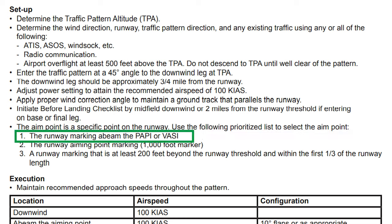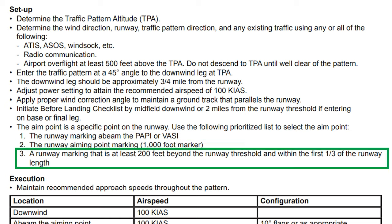They are the runway marking abeam the VASI or the PAPI, the runway aiming point or 1,000-foot marker, and finally, a runway stripe that is at least 200 feet beyond the threshold and is within the first third of the runway.